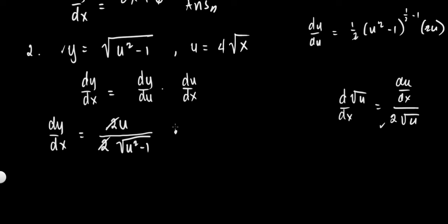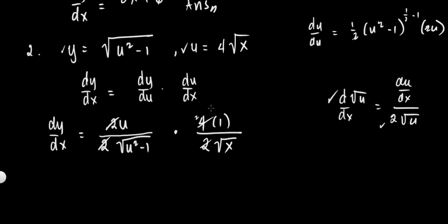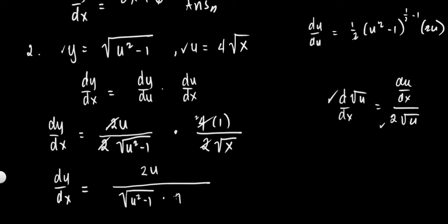Multiplied by du over dx. We have constant 4, and the derivative of the square root of x is 1 over 2 times the square root of x. So 4 divided by 2 gives 2. After simplification, we have dy over dx equal to 2u over the square root of u squared minus 1 times the square root of x.